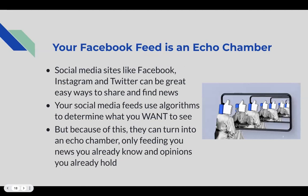Now, more about algorithms and how Facebook and other social media feeds actually work — they're called echo chambers. Facebook, Instagram, and Twitter can be great ways to share and find news, but these media feeds use algorithms that decide what you want to see. Because of this, they can turn into an echo chamber, only feeding you news you already know and opinions you already hold, rather than providing new information or contrasting perspectives — preventing a holistic view of the situation.